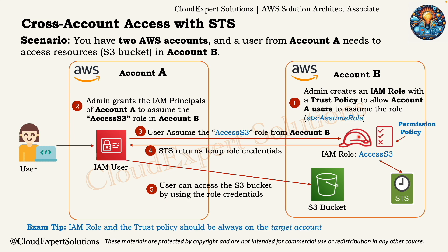For the certification exam, please remember: the IAM role and the trust policy should always be on the target account. AWS may try to trick you — projecting account A as development and account B as production — and give options where the IAM role or trust policy should be created on the development account (account A, where the user is trying to access from), which is completely wrong. The IAM role and the trust policy should always be on the target account.